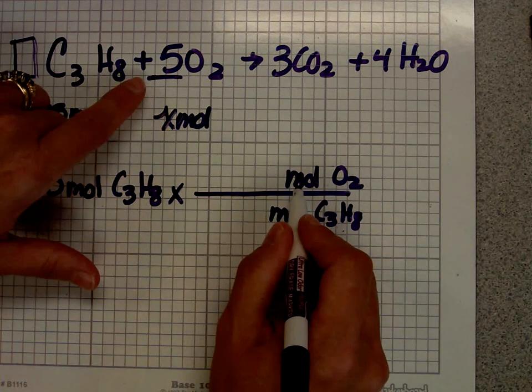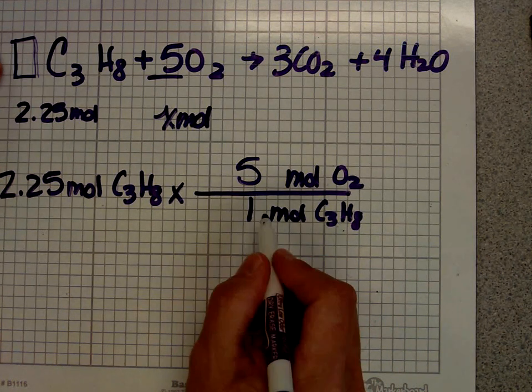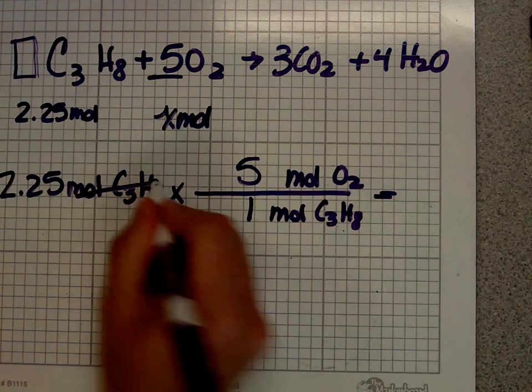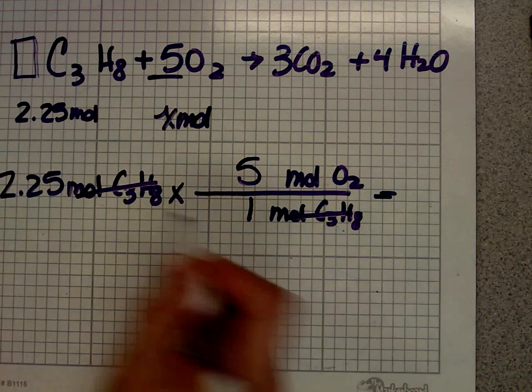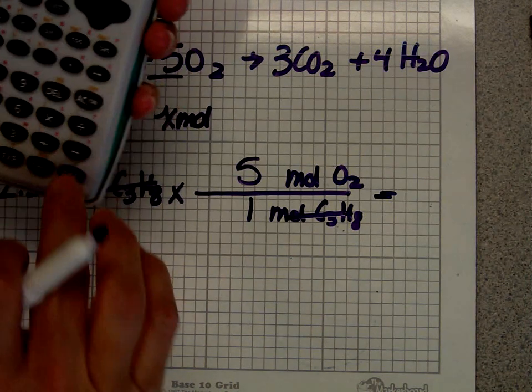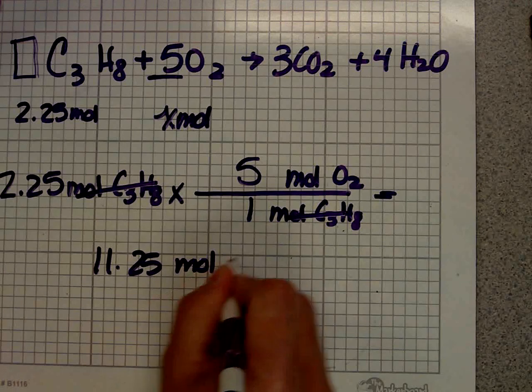What number is by the oxygen? It's a 5. What number is by the C3H8? It's a 1. It's invisible. There's really a 1 there. So all I do is multiply it out, because I can cancel that. 2.25 times 5 gives me 11.25 moles of oxygen.